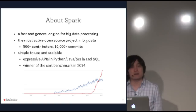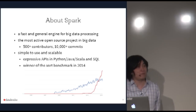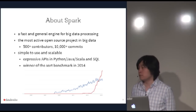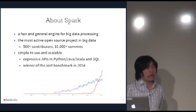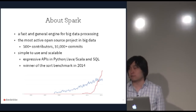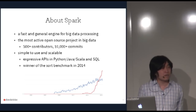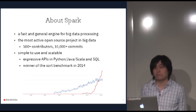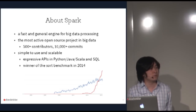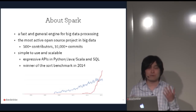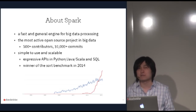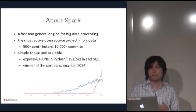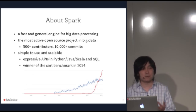MLlib is a component of Spark, so let me say a few words about Spark. Spark is a fast and general engine for big data processing — think about MapReduce, but faster. It's the most active open source project in the big data world, with more than 500 contributors and more than 10,000 commits. We just had a 1.3 release last week, so definitely go to the Spark website and try it out.